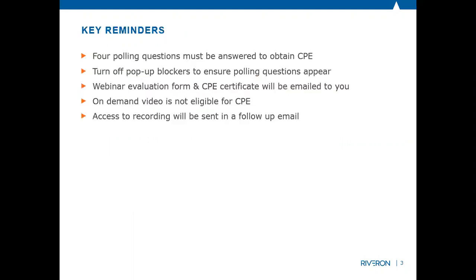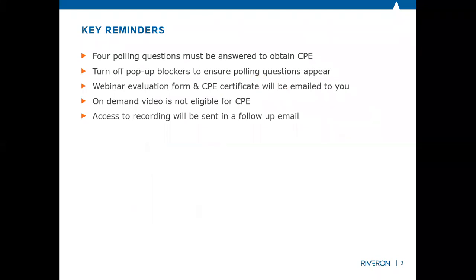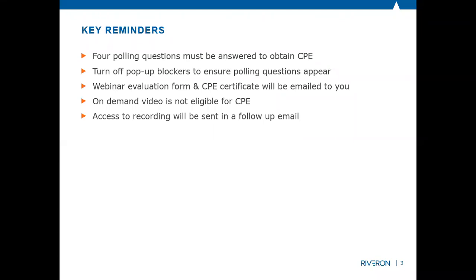There will be four polling questions. In order to obtain the CPE, you will have to answer all four polling questions. You will also have to turn off your pop-up blockers. A webinar evaluation form and your CPE certificate will be emailed out to you, usually about a week after the webinar. There will be an on-demand recording available, but it will not be available for CPE.